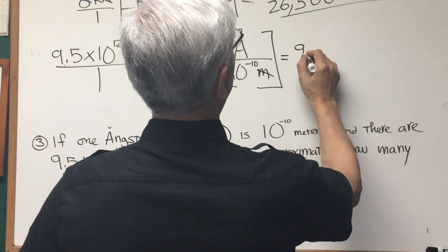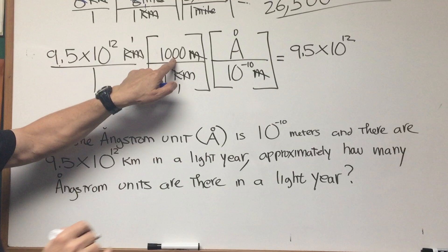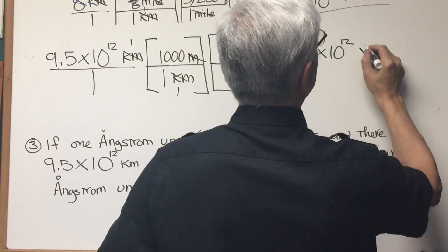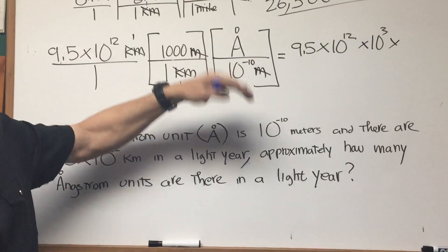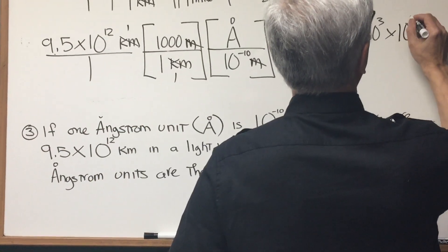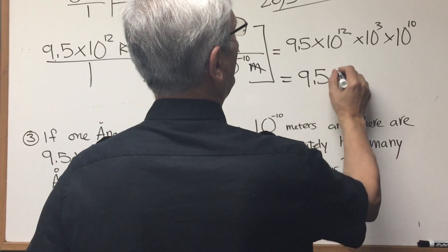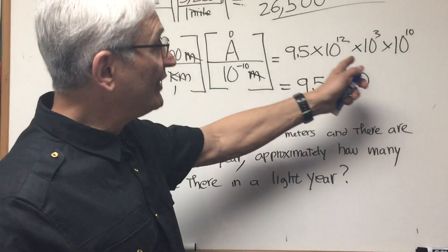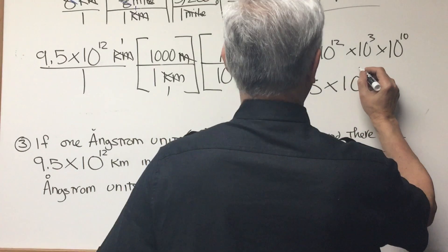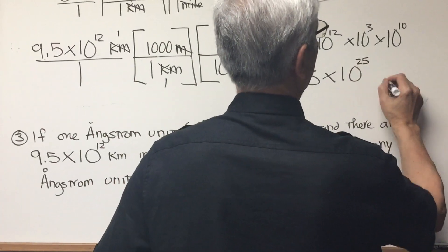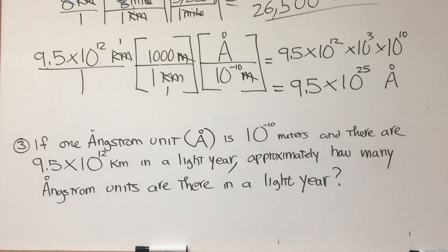Simplifying: we have 9.5 times 10 to the 12th, times 10 to the third (from kilometers to meters), and when we bring 10 to the minus 10 from the denominator to the numerator it becomes 10 to the positive 10th. Our final answer is 9.5 times 10 to the sum of the powers: 12 plus 3 is 15, plus 10 is 25 — so 9.5 times 10 to the 25 angstrom units. That's a heck of a lot of angstrom units!